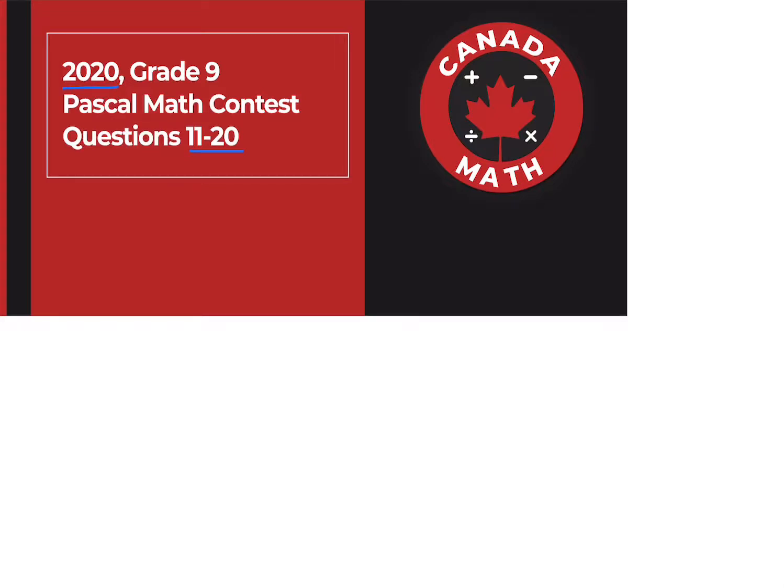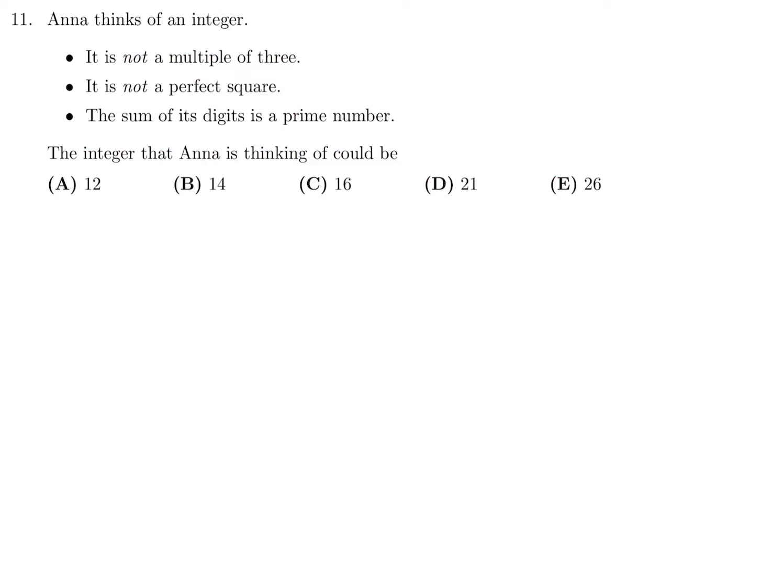Questions 11 through 20 on the 2020 Grade 9 Pascal Math Contest. Anna thinks of an integer. It is not a multiple of 3. It is not a perfect square. The sum of the digits is a prime number. Anna could be thinking of which number.